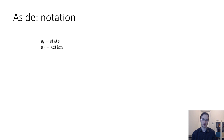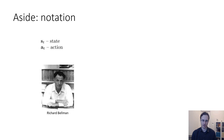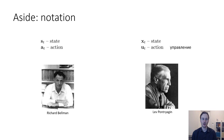A little aside on notation: in reinforcement learning we typically use s to denote state and a to denote action — reasonable because those are the first letters of those words. This terminology was popularized by the study of dynamic programming, pioneered by Richard Bellman in the 1950s. If you have a background in robotics, optimal control, and linear systems, you might be more familiar with notation where x denotes state and u denotes action. This is exactly equivalent. x makes sense for state as it's the variable for an unknown in algebra, and u is the first letter for action in Russian — управления — popularized by folks like Lev Pontryagin studying optimal control in the Soviet Union.